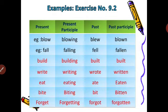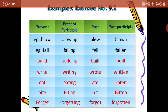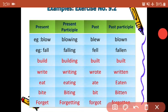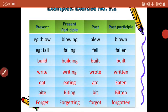Let us see the example of exercise number 9.2. As you can see, there are four columns: present, present participle, past, and past participle. The present form is the main word or main action, and the other three forms change according to the tense or time of the action done. For example: blow.